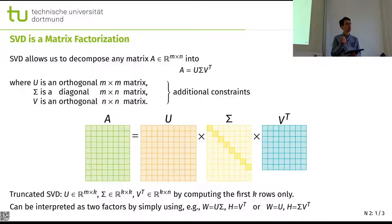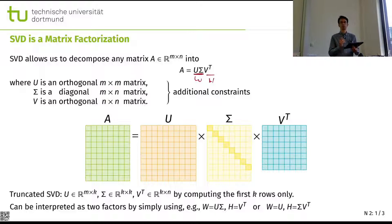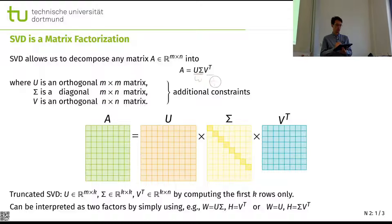But of course, we can, for example, multiply these and call this one W and this one H. Then we have that. Or we can call this one W and this combination H, depending on what you want. And then we can get back into the framework that we had before.